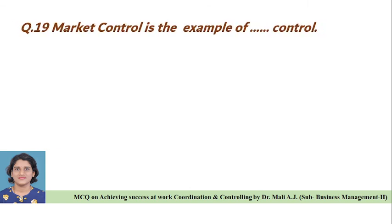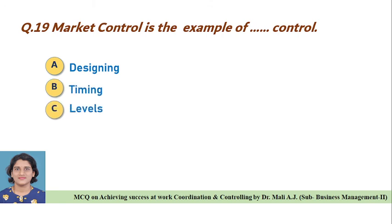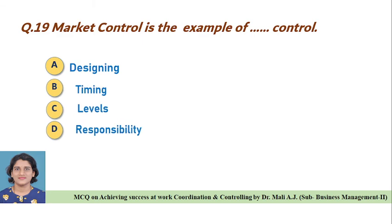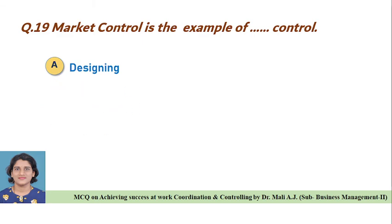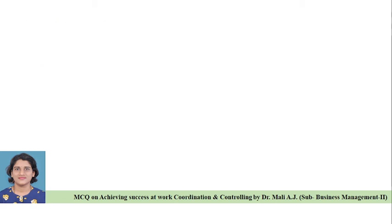Question nineteen: Market control is the example of dash control — Option A: designing, Option B: timing, Option C: levels, Option D: responsibility. Correct answer is Option A, market control is the example of designing control.